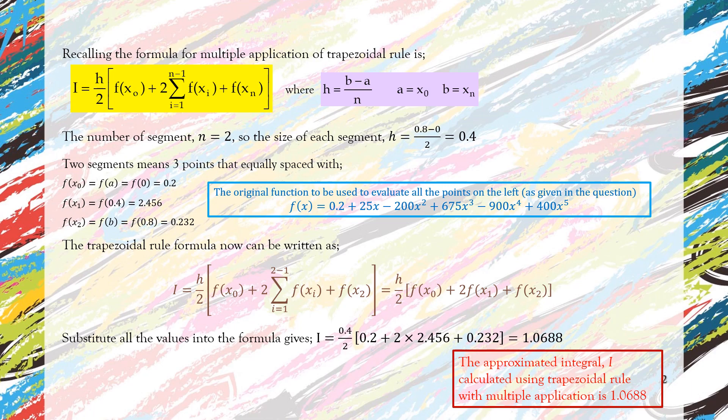So this is the approximated integral of I when we calculated using the trapezoidal rule with multiple application. Of course then we can calculate the true error, so as you can see the true error is smaller compared to the single application and can be reflected by the percentage true error which is 34.90%.